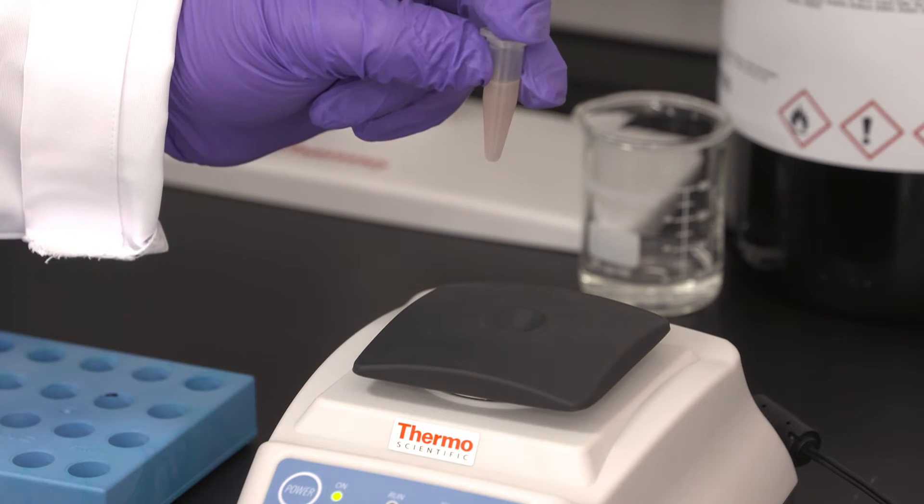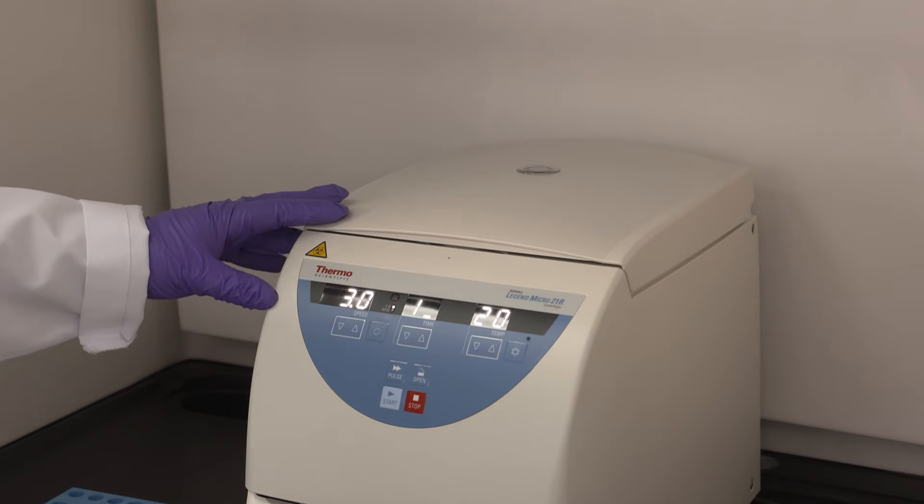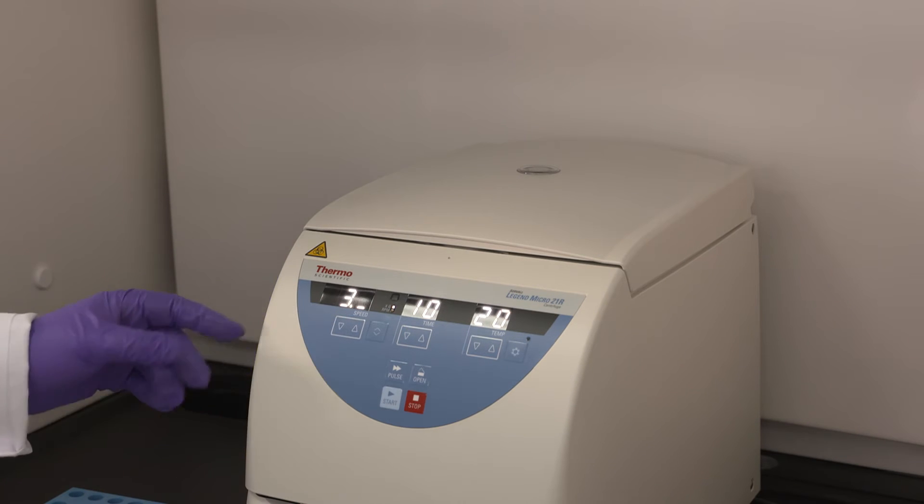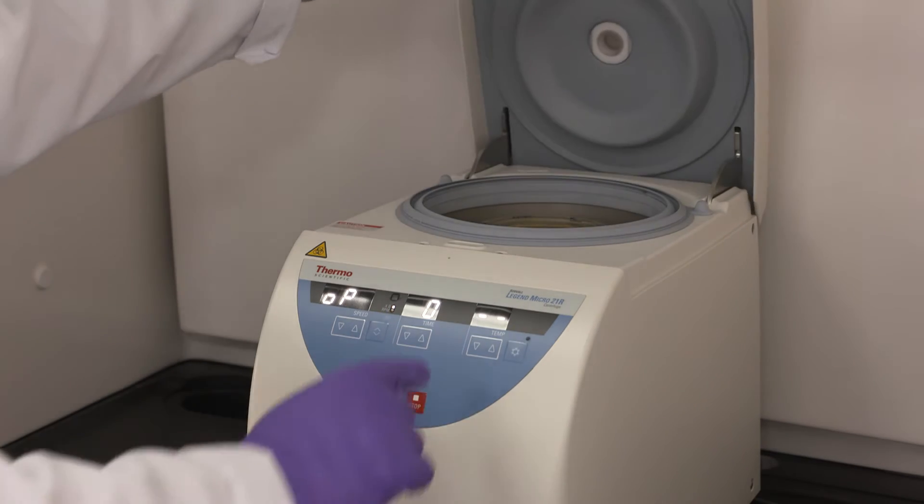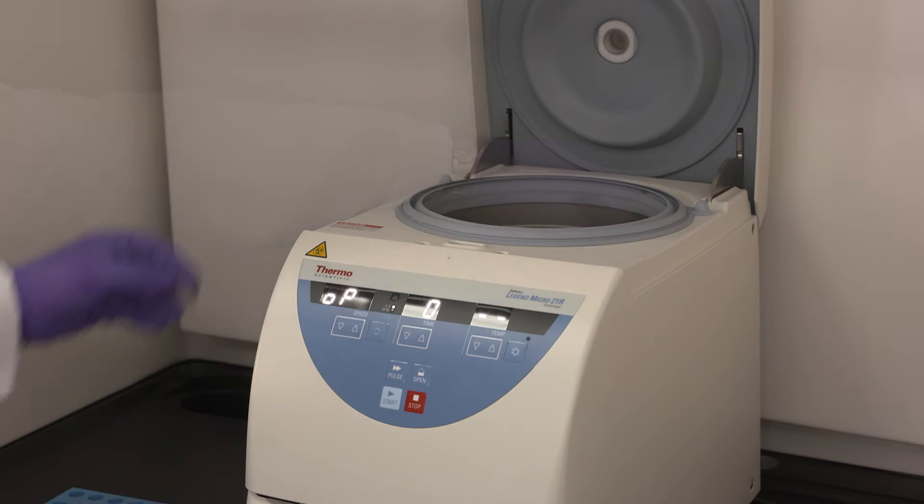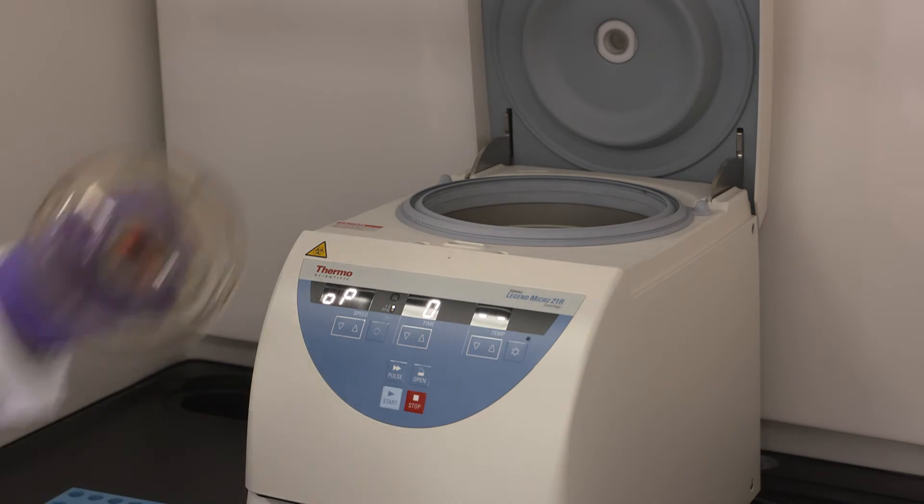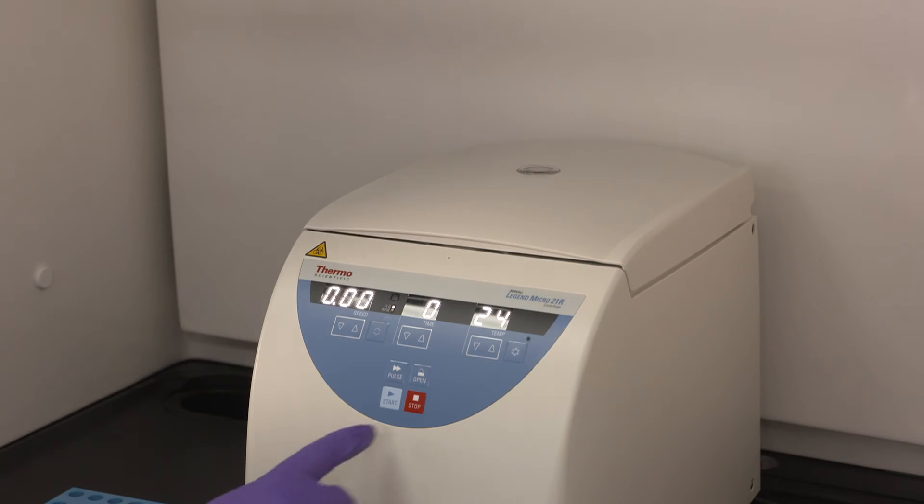When the sample is completely homogenous, we will centrifuge the sample at 3000 g. Following the vortexing, we will centrifuge the sample at 3000 g for 10 minutes at room temperature. The protein will be concentrated mainly at the bottom and the side of the tube, and we will be able to remove the mixture of acetone and water.